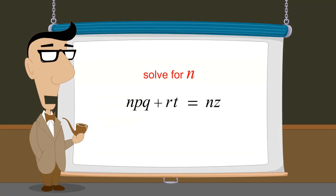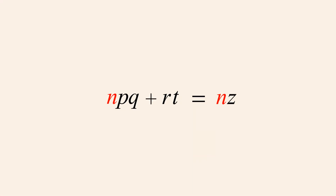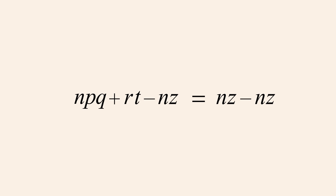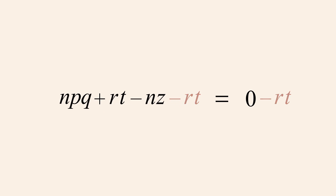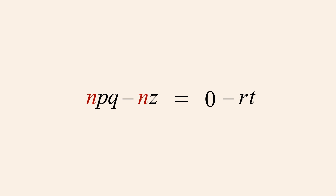Sometimes we may wish to solve for a variable which appears more than once in the equation. To end up with the variable n alone on the left side, we must somehow combine the two occurrences of n in this equation. We will start by moving all the terms which contain the variable n to one side of the equation. To do this we subtract the term nz from both sides, allowing us to cancel the nz term on the right. We then subtract the term rt from both sides, eliminating the rt term on the left. Now all the terms which contain the variable n are on the left side, and all the terms without n are on the right.